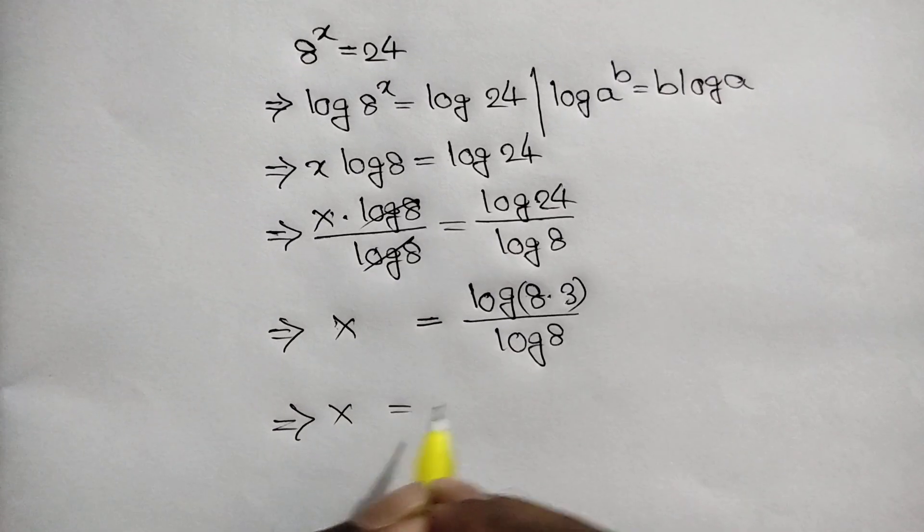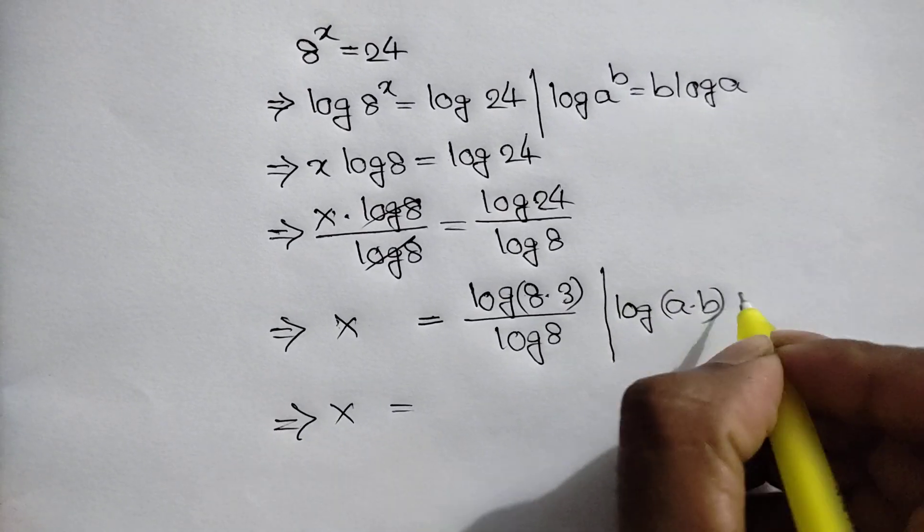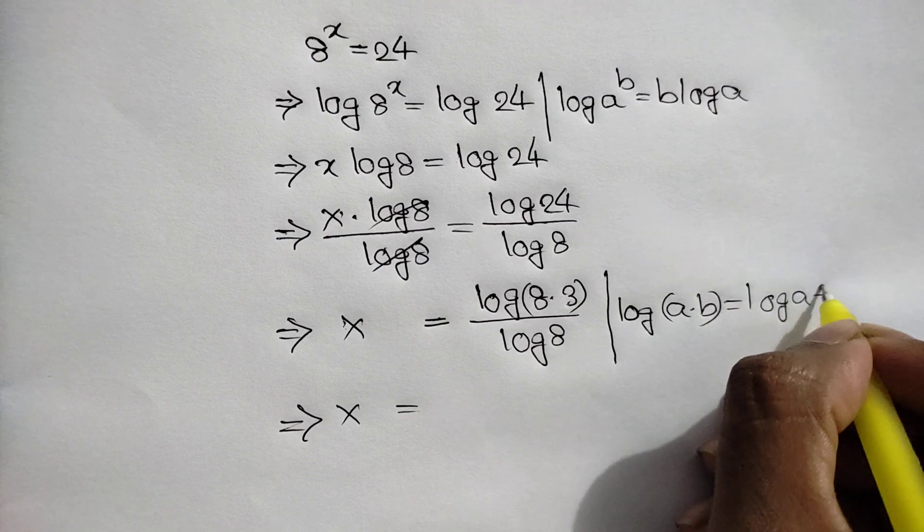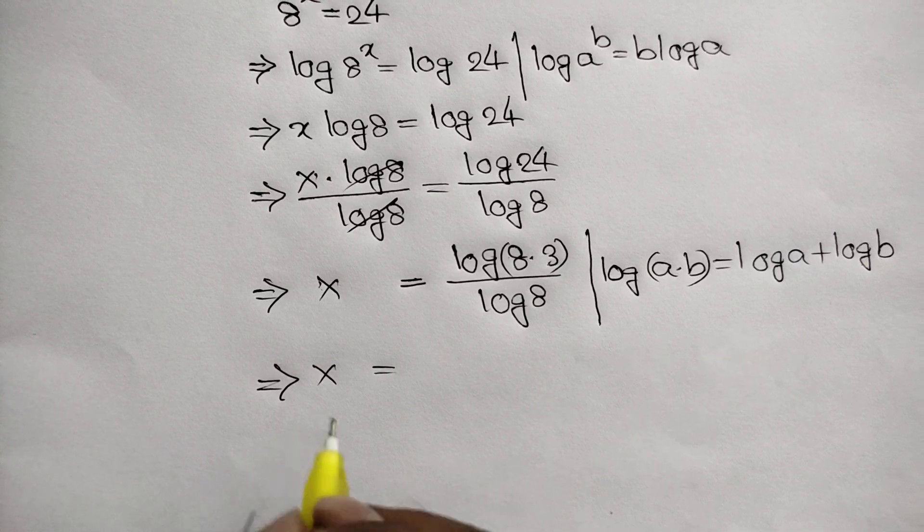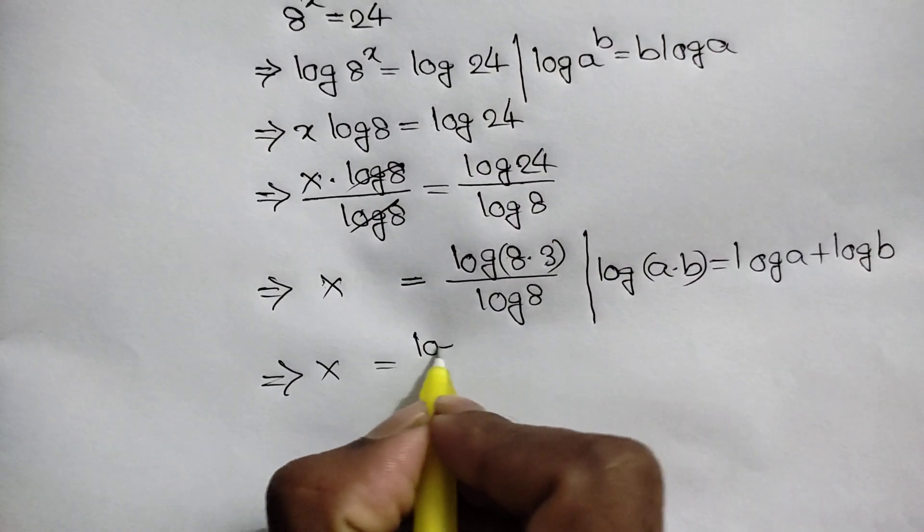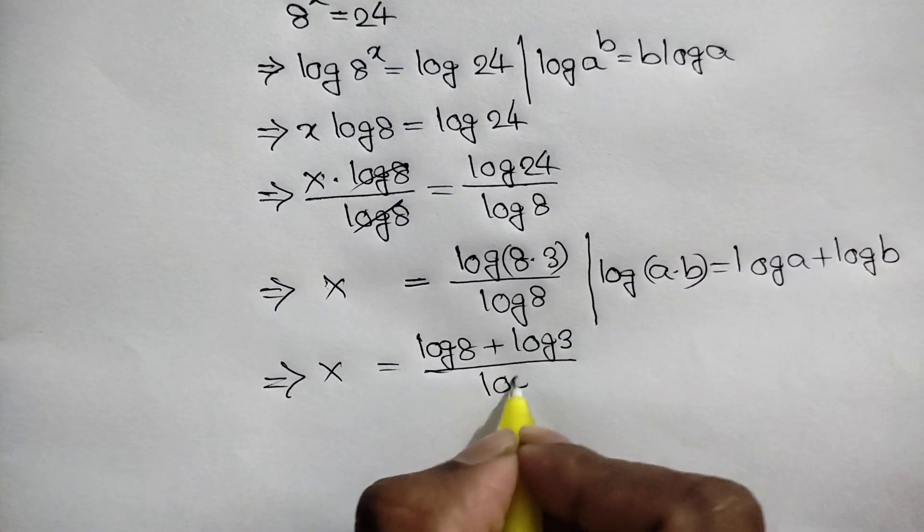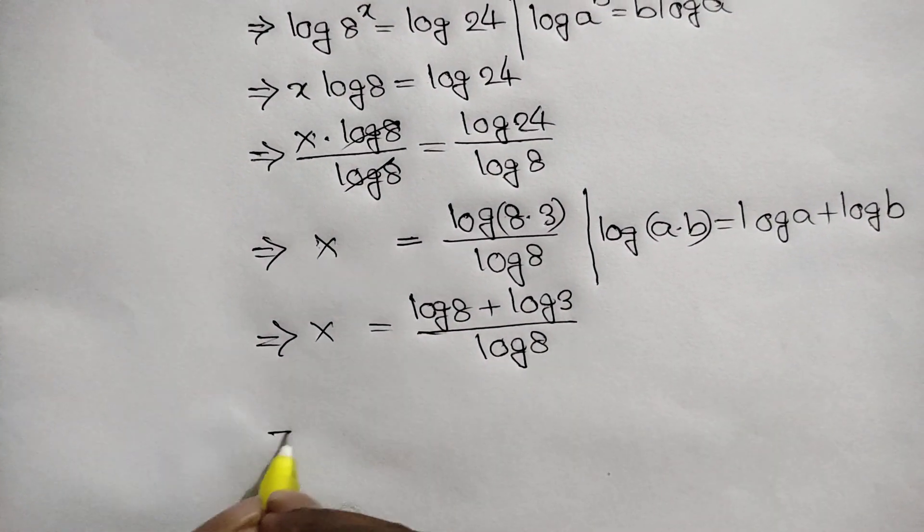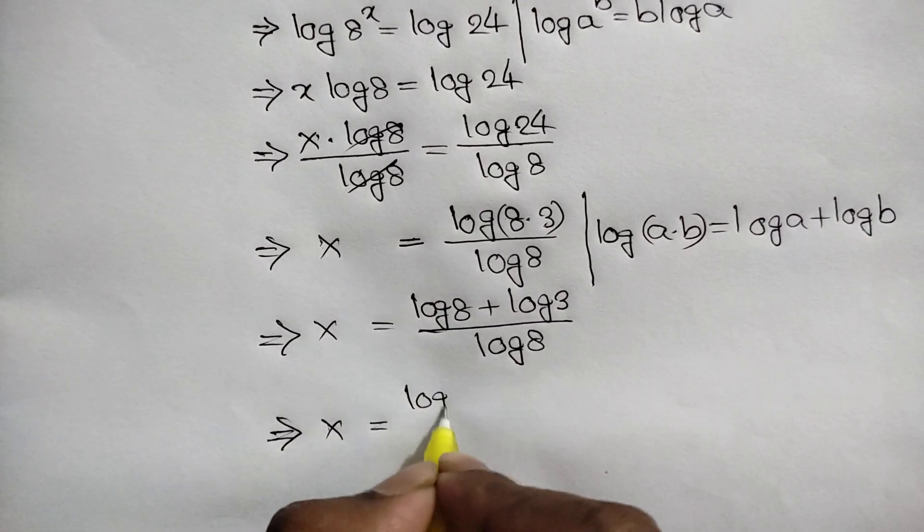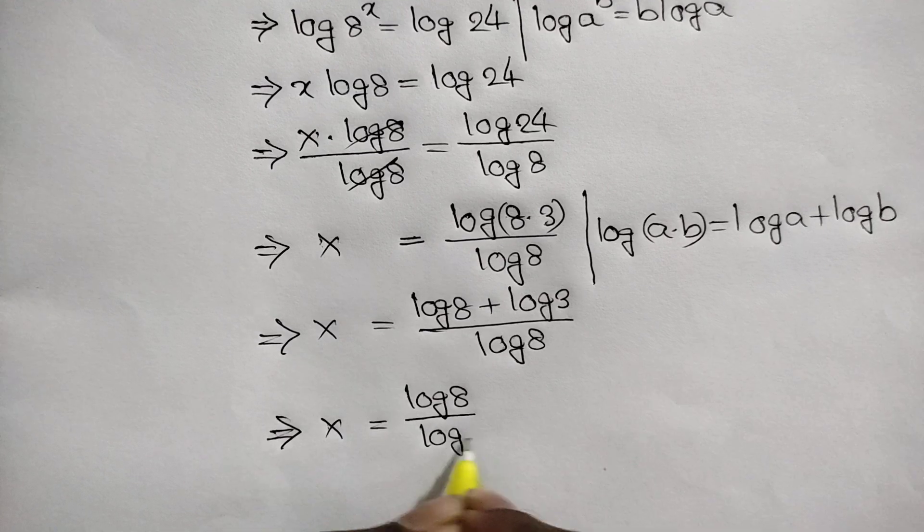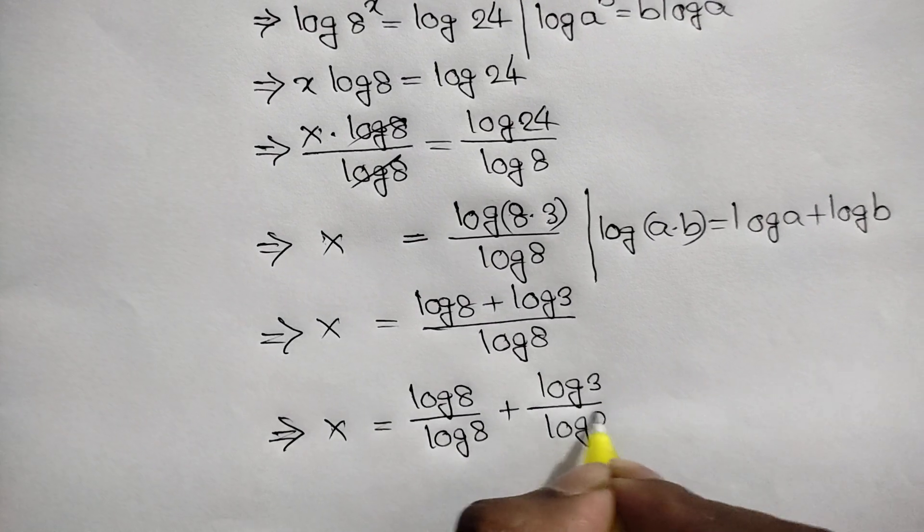Here we can apply the rule: log(a times b) equals log a plus log b. So we can write log 8 plus log 3 over log 8. Or x equals log 8 over log 8 plus log 3 over log 8.